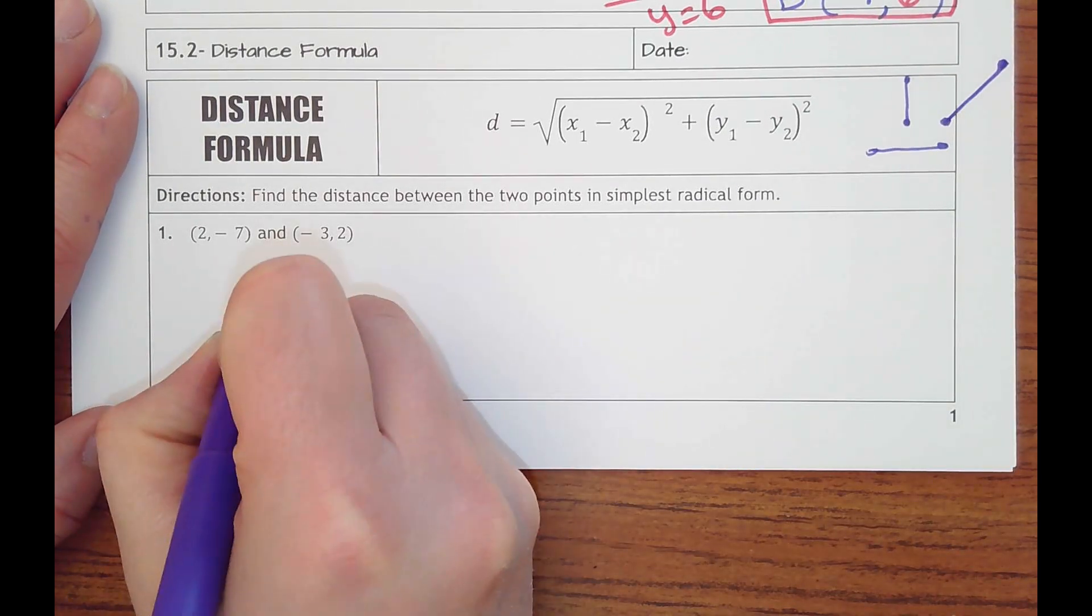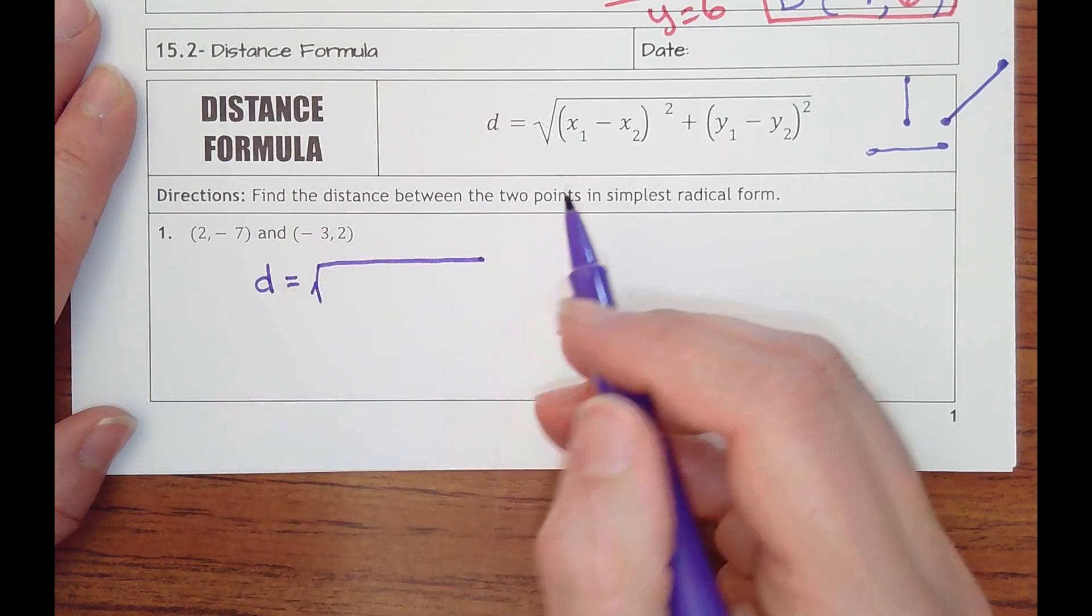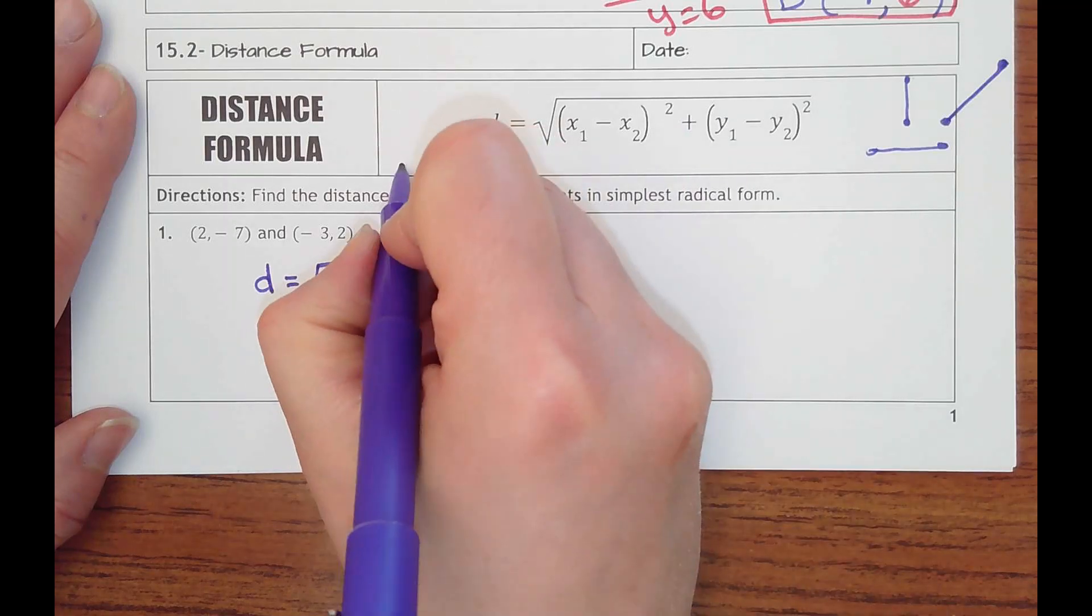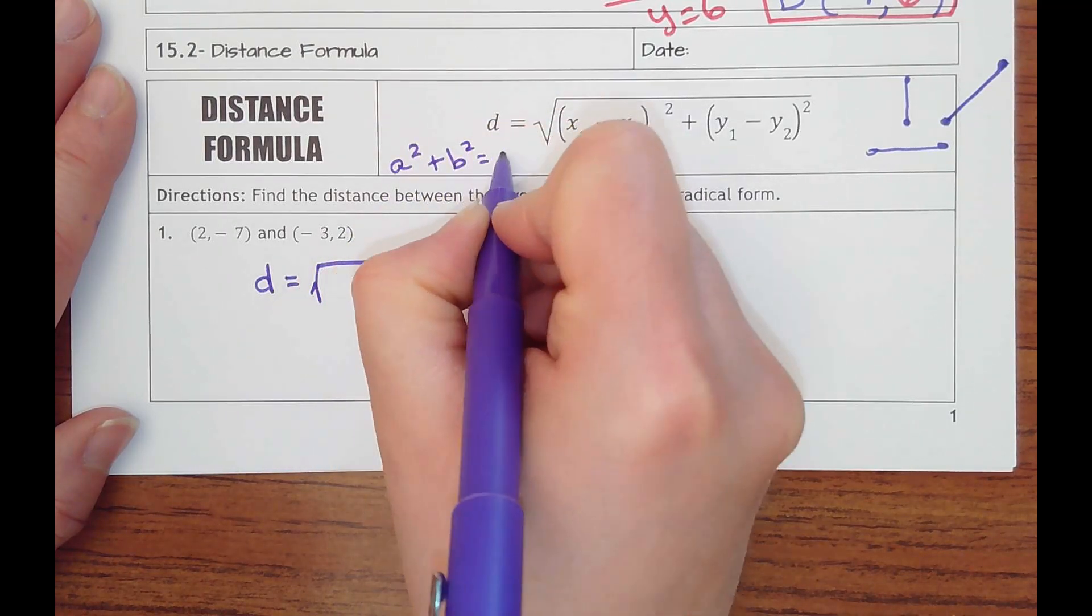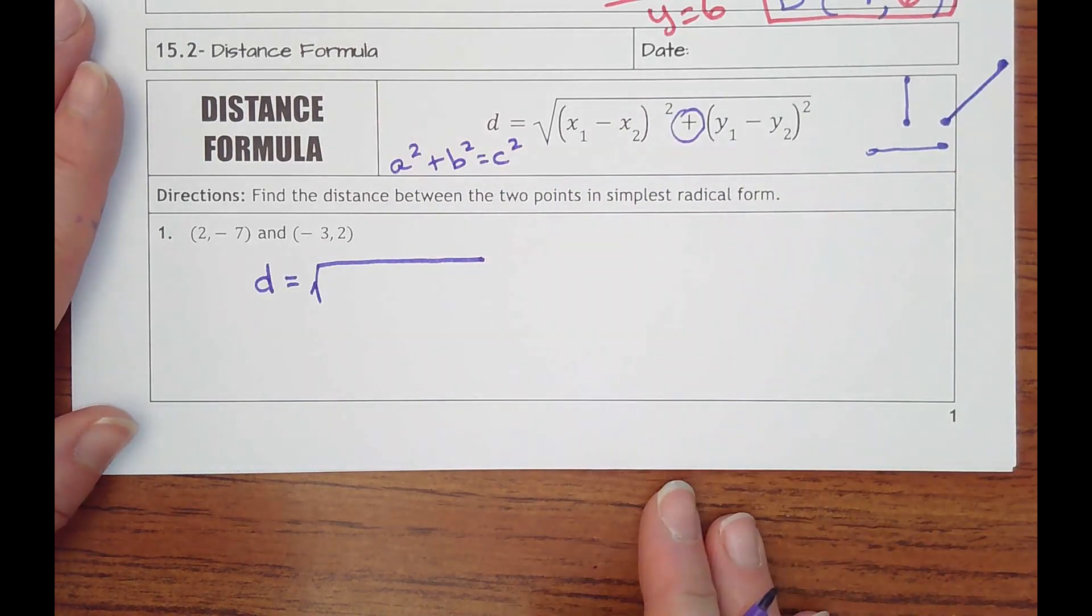So we're going to find the distance between these two points. And I want to tell you too that this comes actually from the Pythagorean theorem, which is a squared plus b squared equals c squared. And so that's why there's a plus sign right here in the middle that helps me.